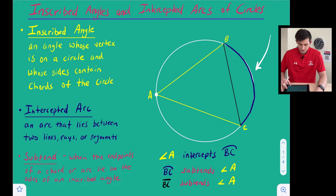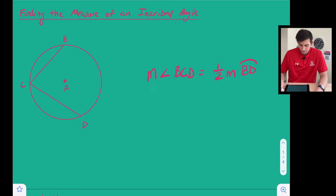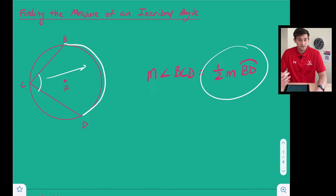Okay so now let's talk about how we actually find the measure of an inscribed angle. Well the measure of the inscribed angle is related to the measure of its corresponding arc. So here if we wanted to find the measure of angle BCD we're going to look at arc BD.